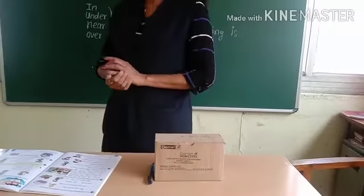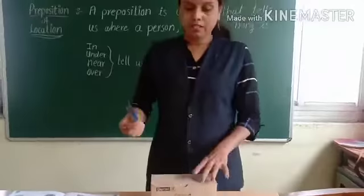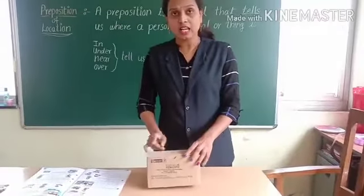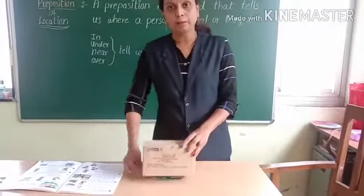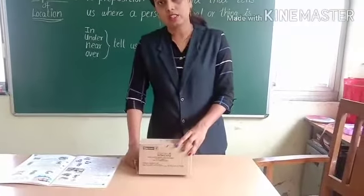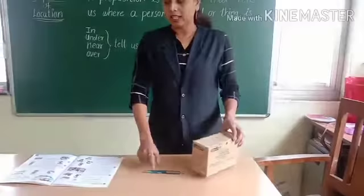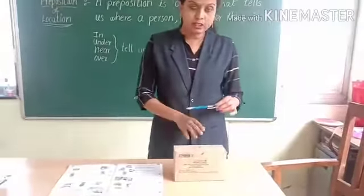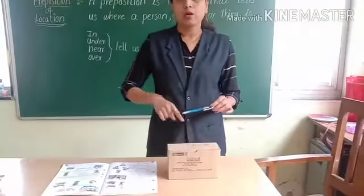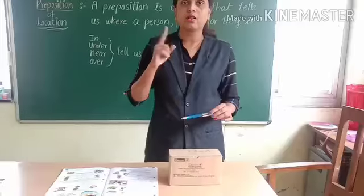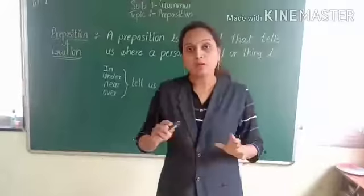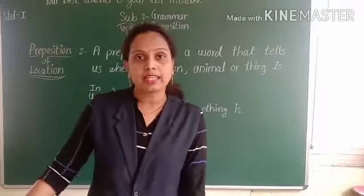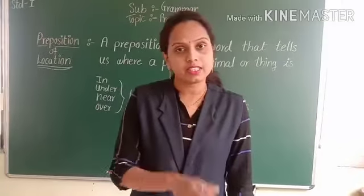Now, 'under'. When I put the pen like this, we say: I put the pen under the box. Now, when we use 'over' — over means not touching that thing. For example: over the sky, over the gate, over the compound, over the bridge. And for 'in', we use it like: in the garden, in the school, in the village, in the city.